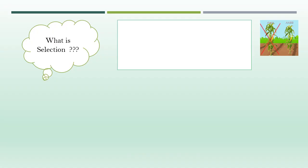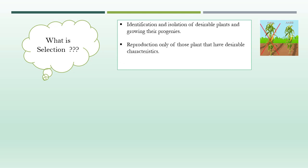In the second phase, conscious and planned selection was practiced to exploit the natural genetic variation existing in crop species. Selection can be defined as identification and isolation of desirable plants and growing their progenies — allowing reproduction only of those plants that have desirable characteristics. It can be of two types: natural selection, carried out by nature where the best-fitted plants survive, and artificial selection, where we practice selection to fulfill our needs. In modern plant breeding, natural selection is of little value, and methods are based entirely on artificial selection.